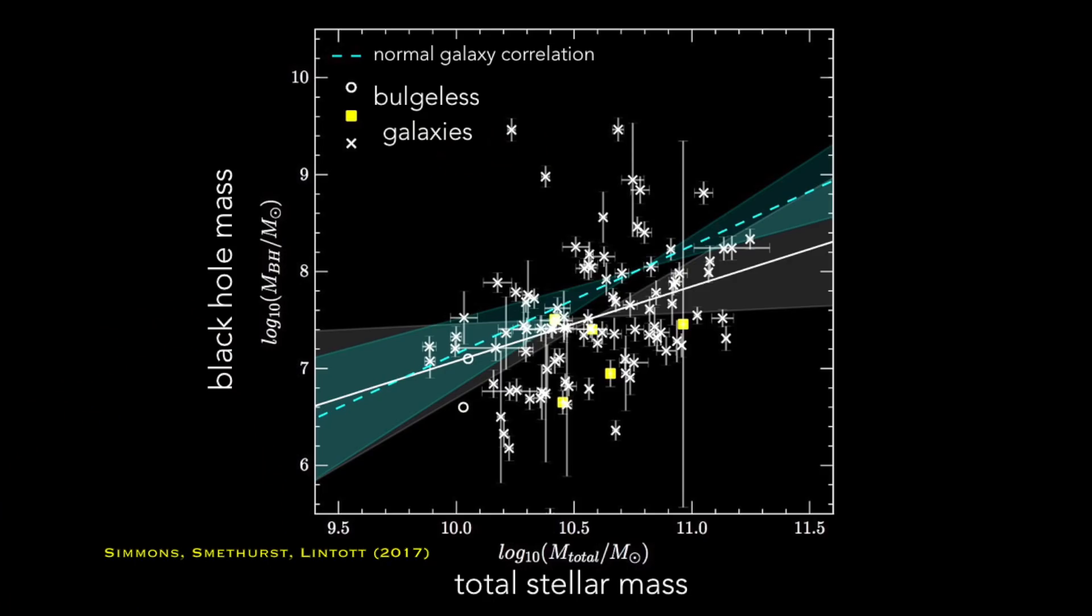With that we found that you find the exact same correlation for these galaxies between total mass and black hole mass, and that they were as big as something that's had a merger and grown its black hole to like a billion times the mass of the sun. You could find these in these bulgeless galaxies as well.